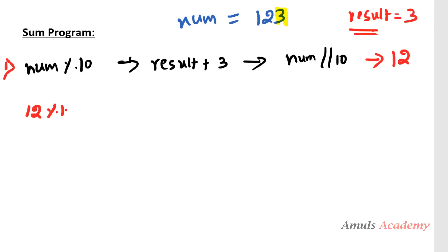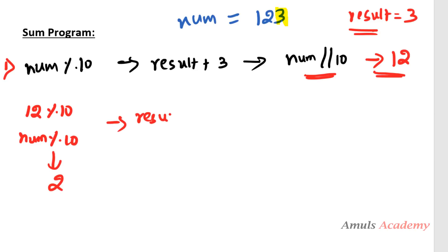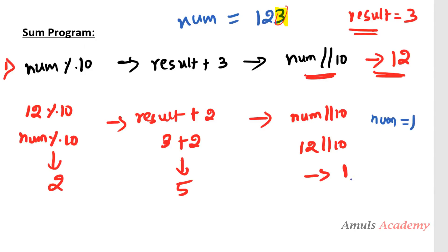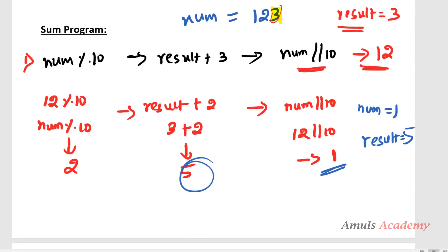Now I want digit 2, so I do 12 % 10, which gives 2. I add it to result: result = 3 + 2 = 5. Then I do num // 10: 12 // 10 = 1, so num becomes 1 and result becomes 5 after this second step.